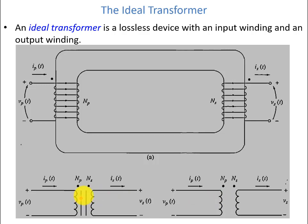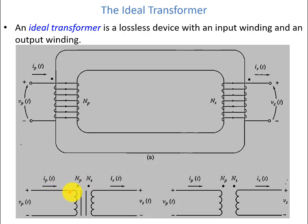Sometimes we are more precise and show two parallel lines to indicate that there is a core inside the transformer. The remaining parameters are the same. The two dots show that current is entering the primary and leaving the secondary, and they have the same potential marking — plus or positive potential.